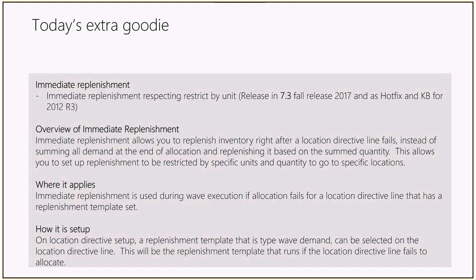You might ask: what if I have immediate replenishment set but the replenishment template setup is wrong or incomplete? We decided not to stop the process. If immediate replenishment fails — either because there are no goods to replenish with or the setup is incorrect — the system logs the failure but passes the quantity to the next location directive line. You will see in the log that it failed, and you can correct your setup for next time. The process continues without stopping.